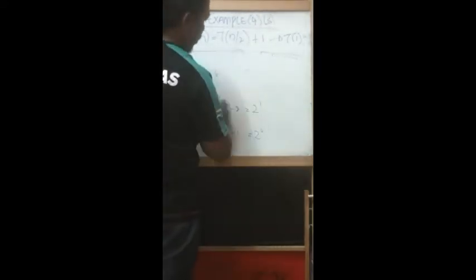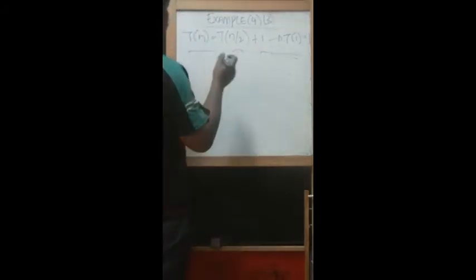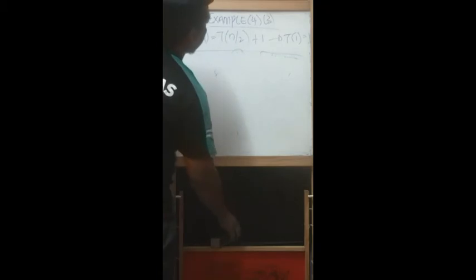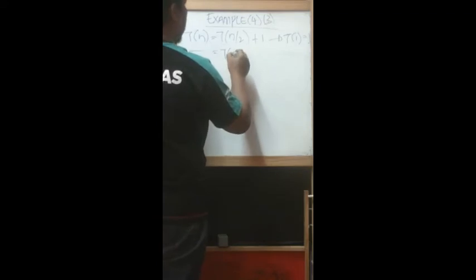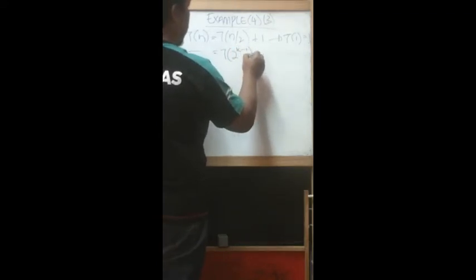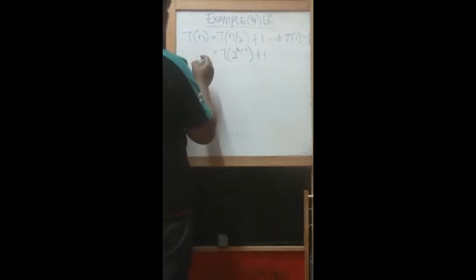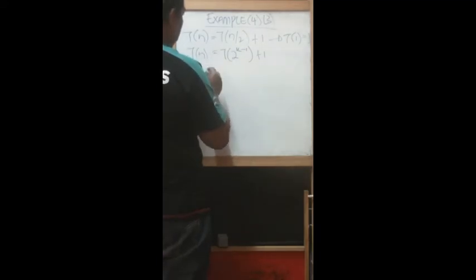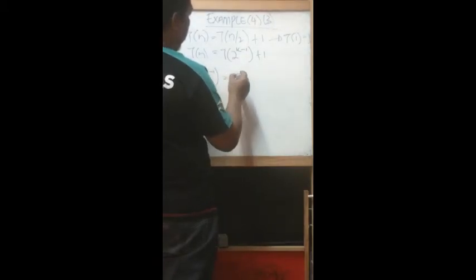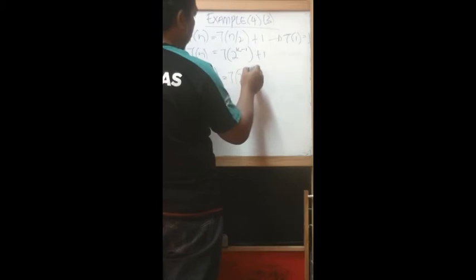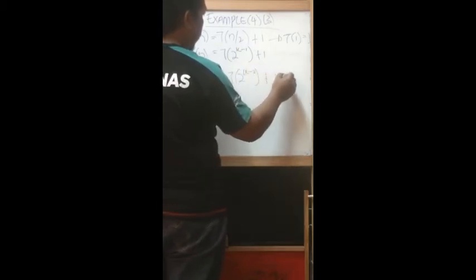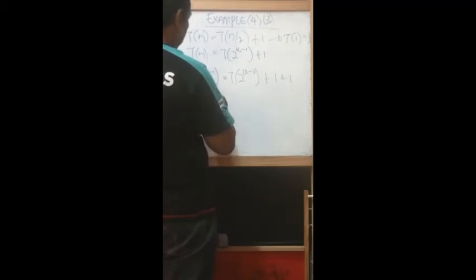We need this form — this is called a recurrence relation. We have to change it to become T of two to the power of k equals T of two to the power of k minus one, plus one. So T(n) similarly gives T of two to the power of k minus one, and expanding: T of two to the power of k minus two, plus one, plus one.